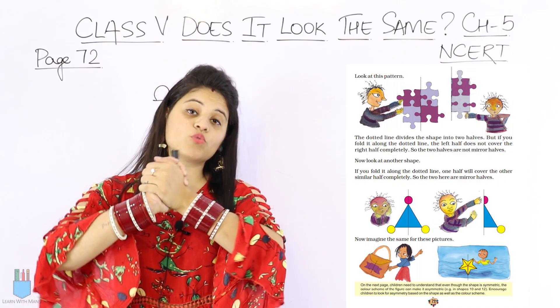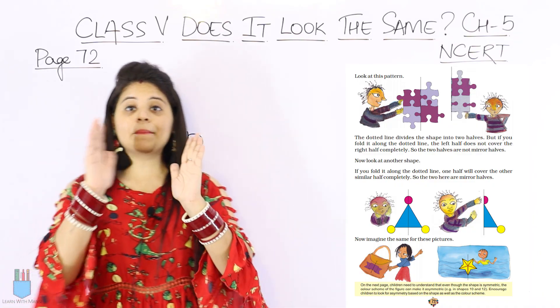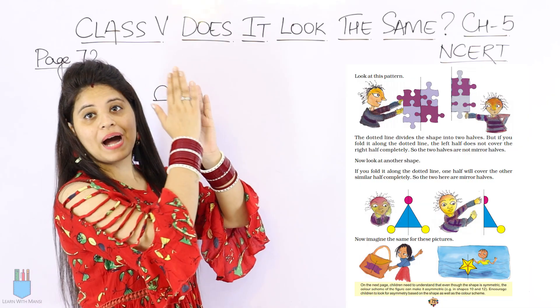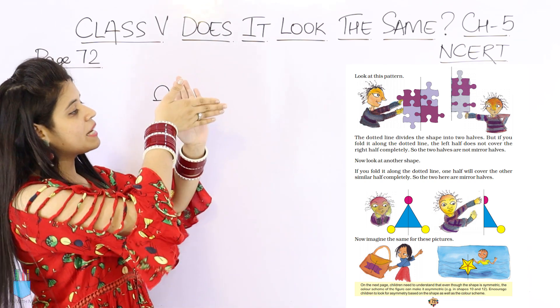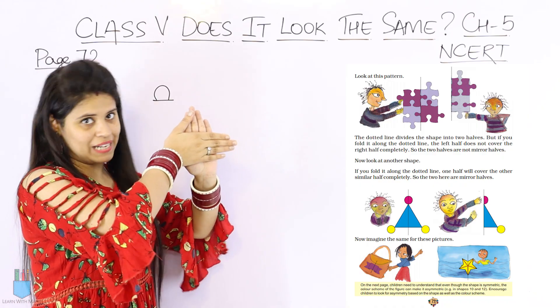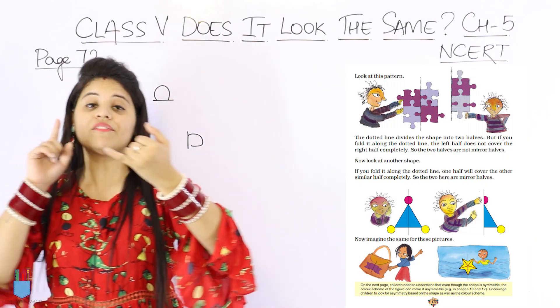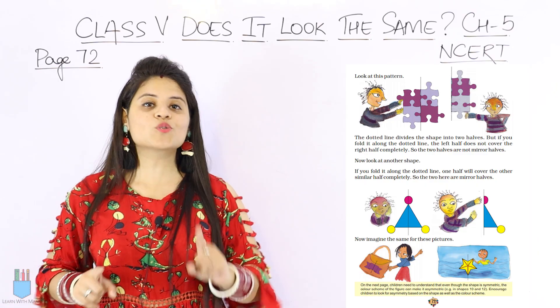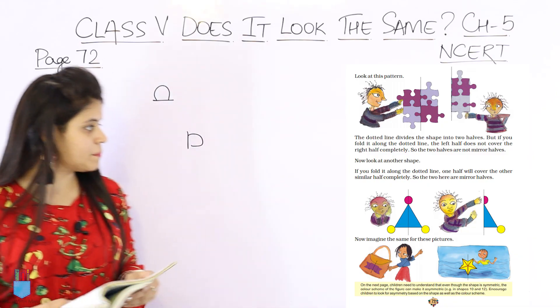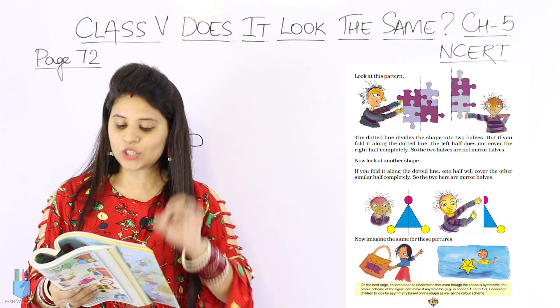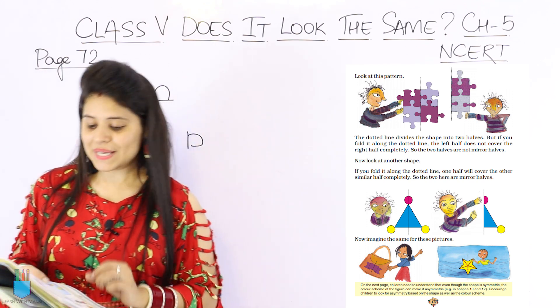When we fold it, then we cover it - it means overlap. What is overlapping? If this is my hand, if I do this, this part is covered. So we say overlap. If I keep my hand like this, this is not overlapping. Here it doesn't cover. So this is the difference. If you cover it and it will be exactly the same, even the colors - everything is same, then it's a mirror half. Now look at another shape. If you fold it along the dotted lines, one half will cover the other similar half completely. So these two are mirror halves.